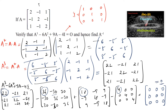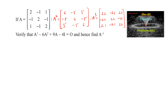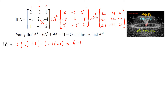Hence we have verified that A³ - 6A² + 9A - 4I = 0. Now we shall find A⁻¹. To find the inverse, let's find the determinant of A. Expanding along the first row: det(A) = 2×(4-1) - (-1)×(−2+1) + 1×(1-2) = 6 - 1 - 1 = 4. Since det(A) = 4 ≠ 0, A⁻¹ exists.